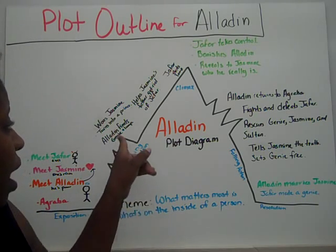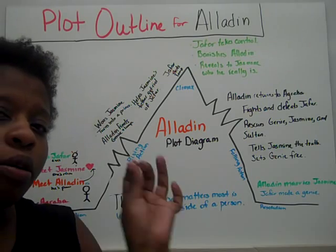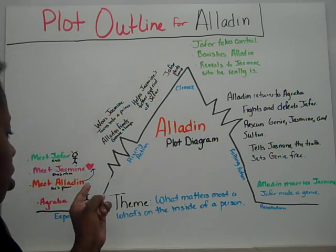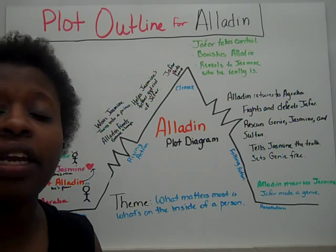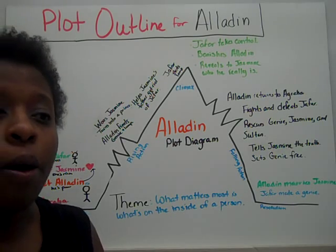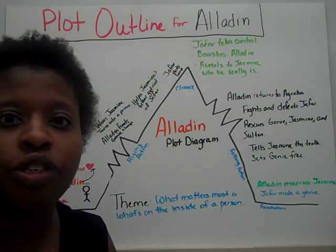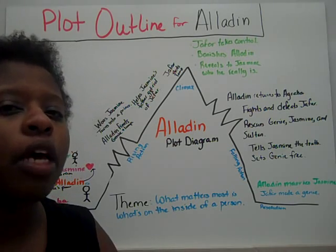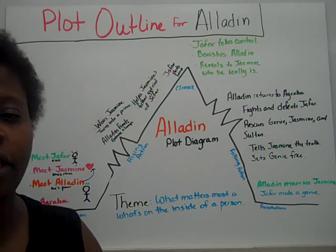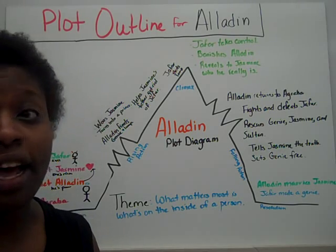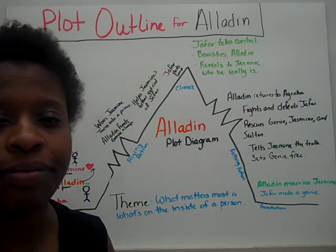Next, we go into the rising action. But first, going back: in the exposition, the inciting incident is where Aladdin is conned by Jafar to go to the Cave of Wonders to retrieve the Golden Lamp. Jafar tries to kill him. Aladdin is sucked back into the Cave of Wonders, and that's our inciting incident — that gets us drawn into the story.